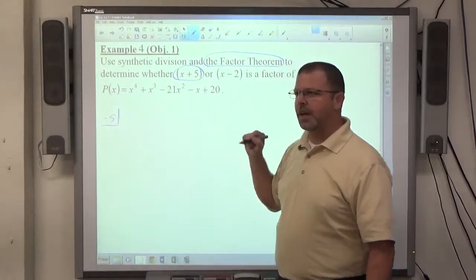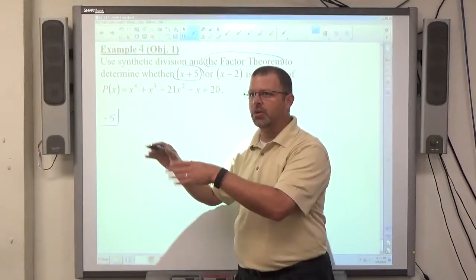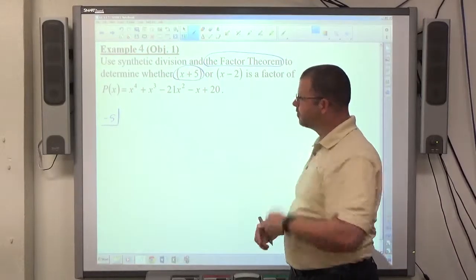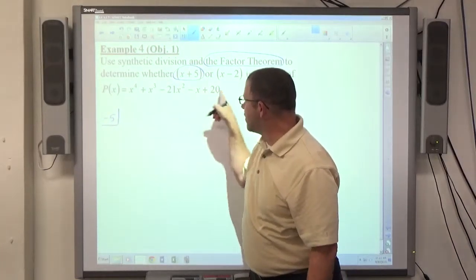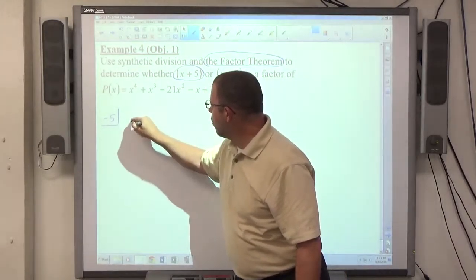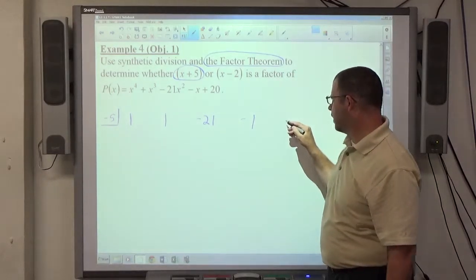I didn't give that specific scenario in class. So if a power is missing, obviously put a 0 in that spot, but if a constant is missing, then the last number on your list here is going to be a 0. Anyway, this one there is nothing missing. We have 4th, 3rd, 2nd, 1st, constant, all the powers are there. So 1x to the 4th, 1x to the 3rd, negative 21x squared, negative 1x, and 20.